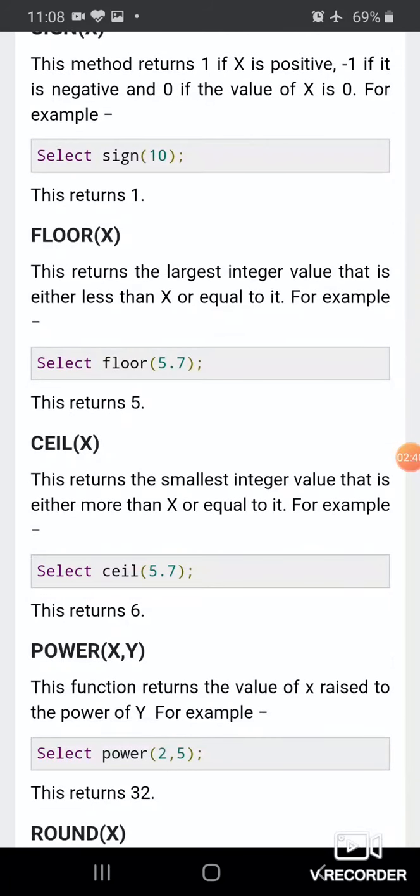CEIL(X) returns the smallest integer that is either more than X or equal to X. For example, SELECT CEIL(5.7) returns 6. FLOOR gives us the smallest value, and CEIL gives the highest integer value.